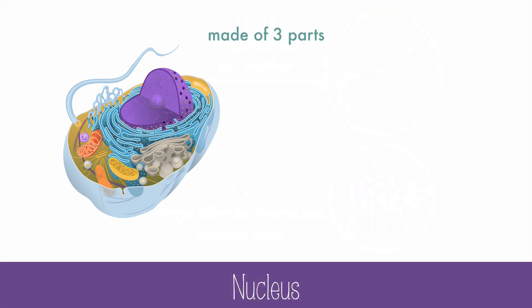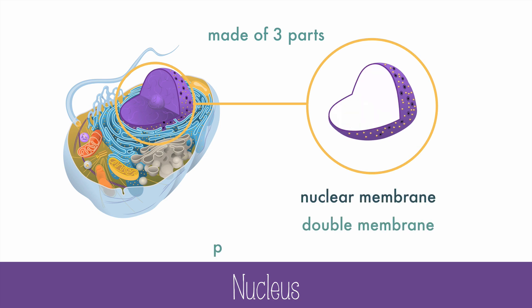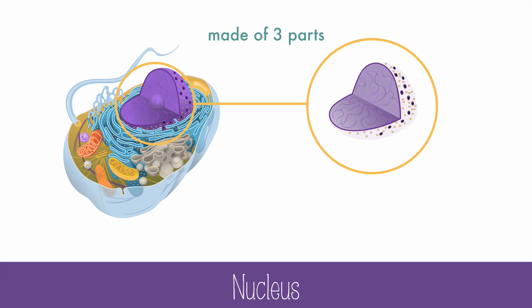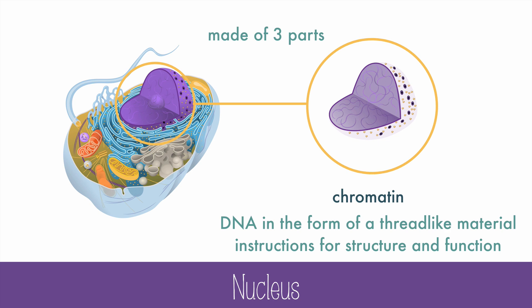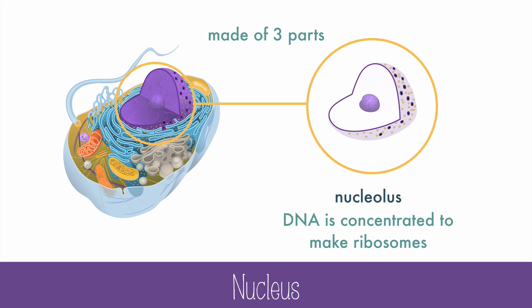The nucleus contains the DNA, but it's actually made of three more specific parts. The nuclear membrane is a double membrane that has little pores that provide passageways for RNA and other materials to go in and out, but the pores aren't big enough for the DNA to move out. Inside the nucleus is the DNA in the form of a thread-like material called chromatin. DNA has the instructions for the structure and function of the organism. The nucleolus is the dense, round area in the nucleus where the DNA is concentrated to build ribosomes.